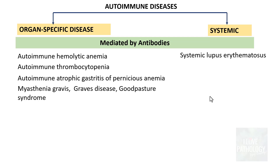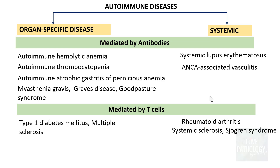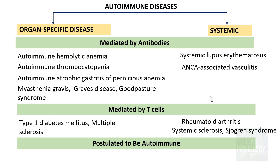ANCA-associated vasculitis — anti-neutrophilic cytoplasmic antibody-associated vasculitis — involves antibodies targeting neutrophils that damage blood vessel walls. Among T cell-mediated organ-specific diseases: type 1 diabetes mellitus, where T cells attack and destroy insulin-producing beta cells of the pancreas; and multiple sclerosis, where T cells attack the myelin sheath of the central nervous system, impairing nerve function. Systemic T cell-mediated diseases include rheumatoid arthritis, systemic sclerosis where T cells target connective tissue leading to skin and organ fibrosis, and Sjögren syndrome where T cells destroy saliva-producing glands causing dry mouth.